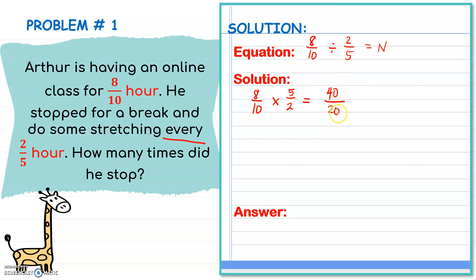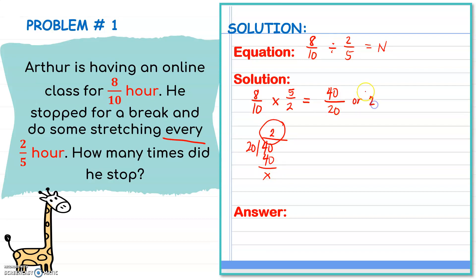We also multiply the denominators: 10 times two is 20. Our answer, 40 over 20, is an improper fraction, so we simplify it by dividing the numerator and denominator. 40 divided by 20 is 2, with no remainder, so our final answer is the whole number 2. Therefore, Arthur stopped for a break two times.